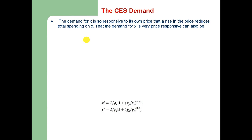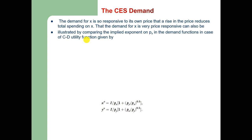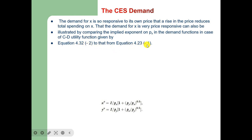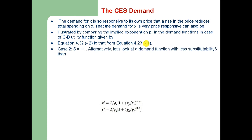The demand for x is very responsive to its own price — a rise in price reduces total spending on x. This can also be illustrated by comparing the implied exponent on p_x in the demand function: for Cobb-Douglas it is -1, but for this CES case it is -2, indicating greater price responsiveness.